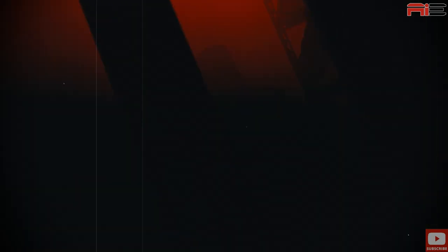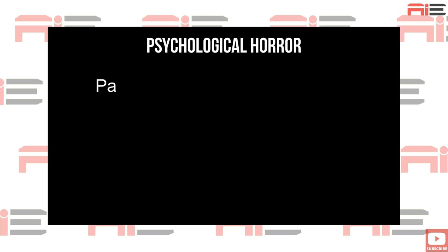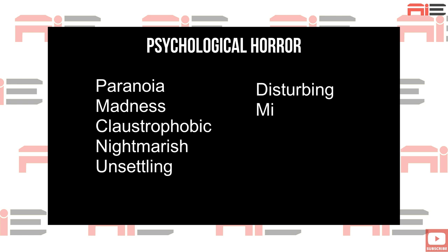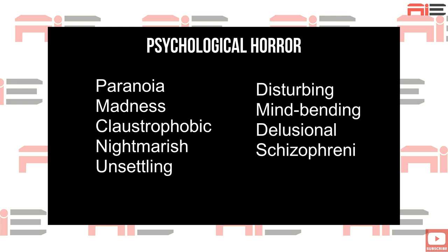Psychological horror usually focuses on the characters' internal struggles and their mental states. It often involves themes of paranoia, hallucinations, and anxiety. The list of keywords from ChatGPT includes: paranoia, madness, claustrophobic, nightmarish, unsettling, disturbing, mind-bending, delusional, schizophrenic, and hysterical.